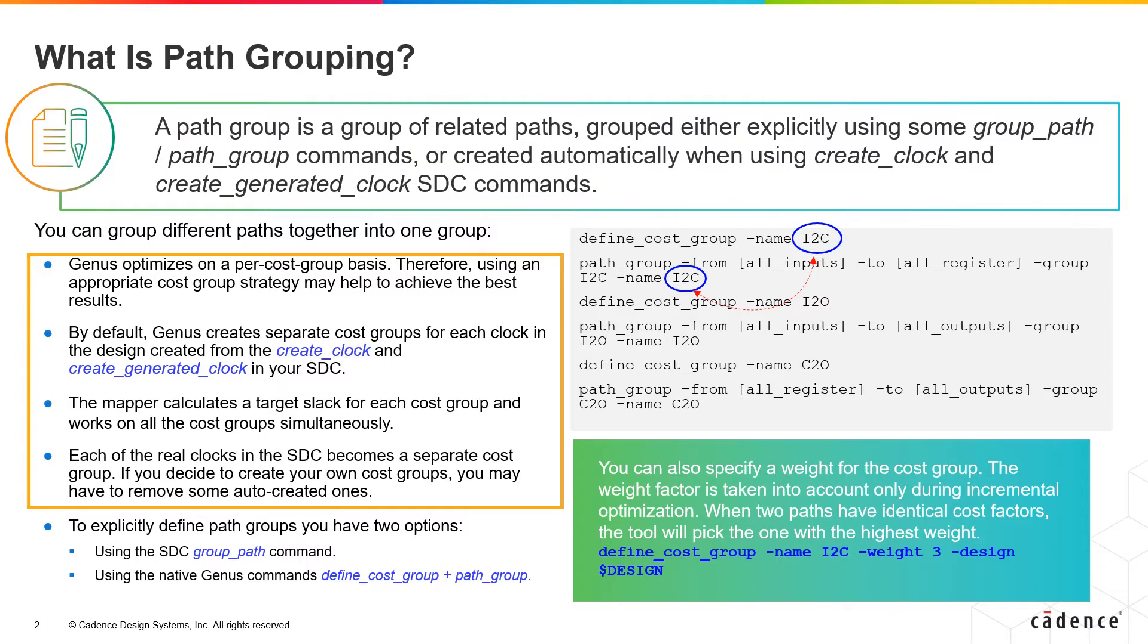if in this process Genus is unable to optimize a path so that it meets timing, then it will not move to the next worst path and Genus will halt the optimization process.